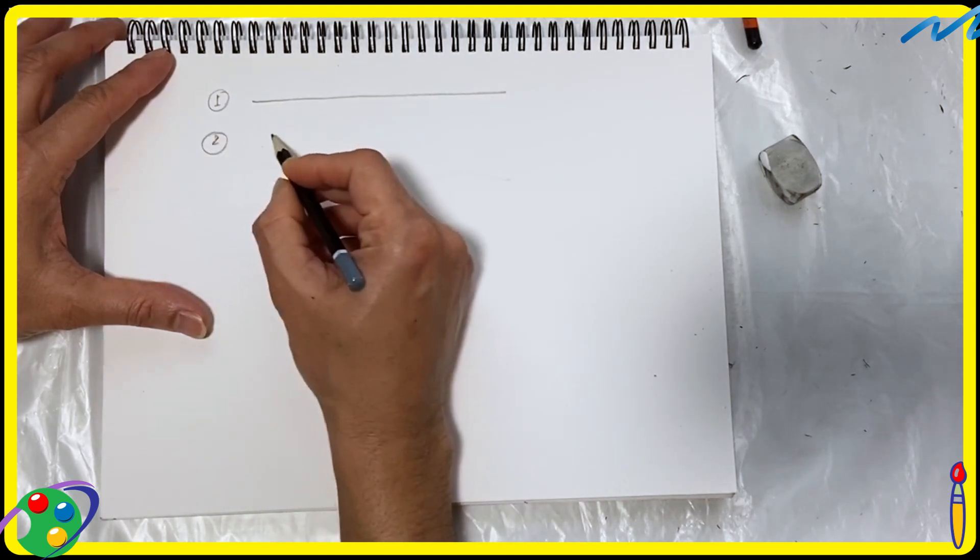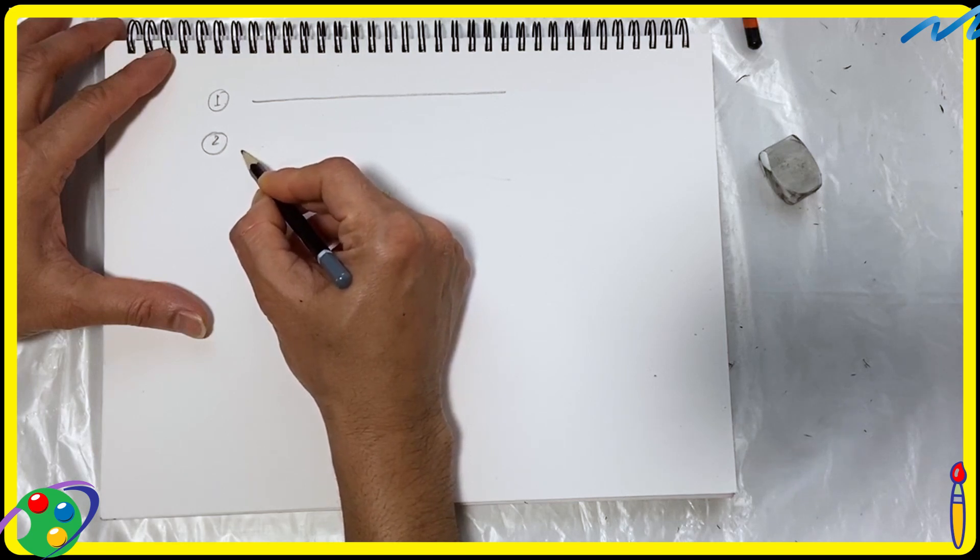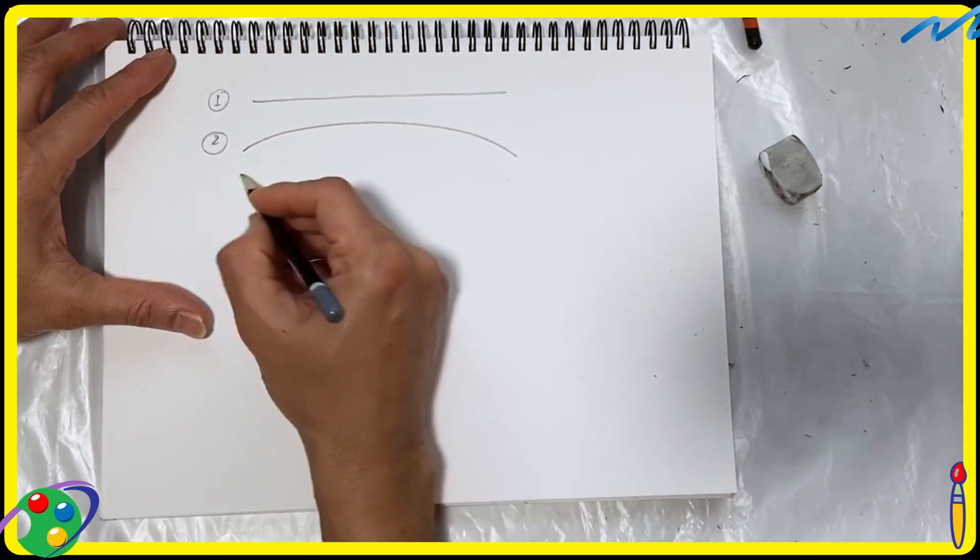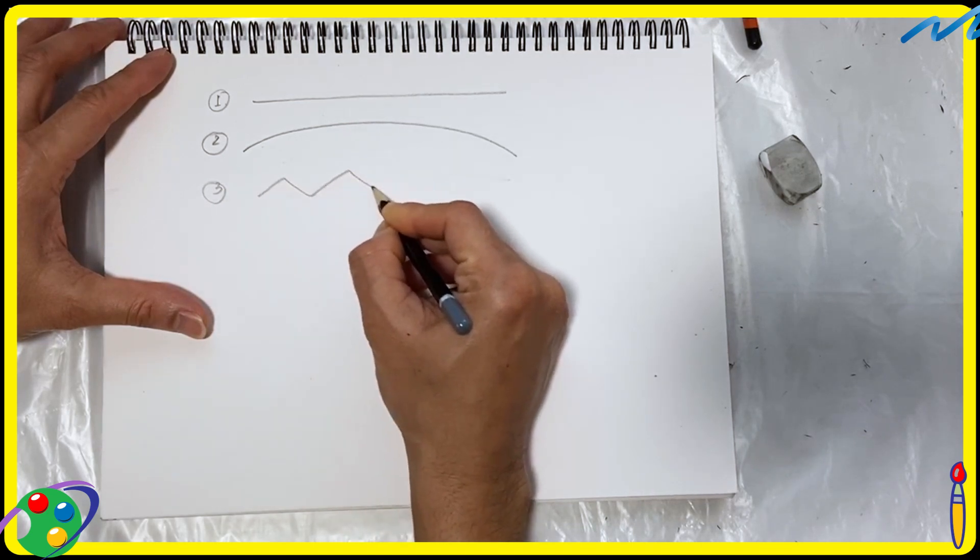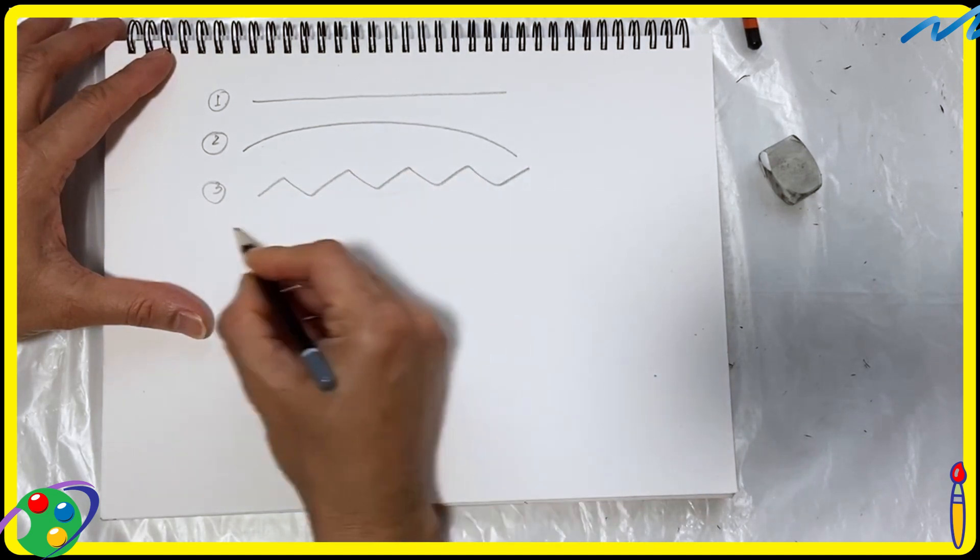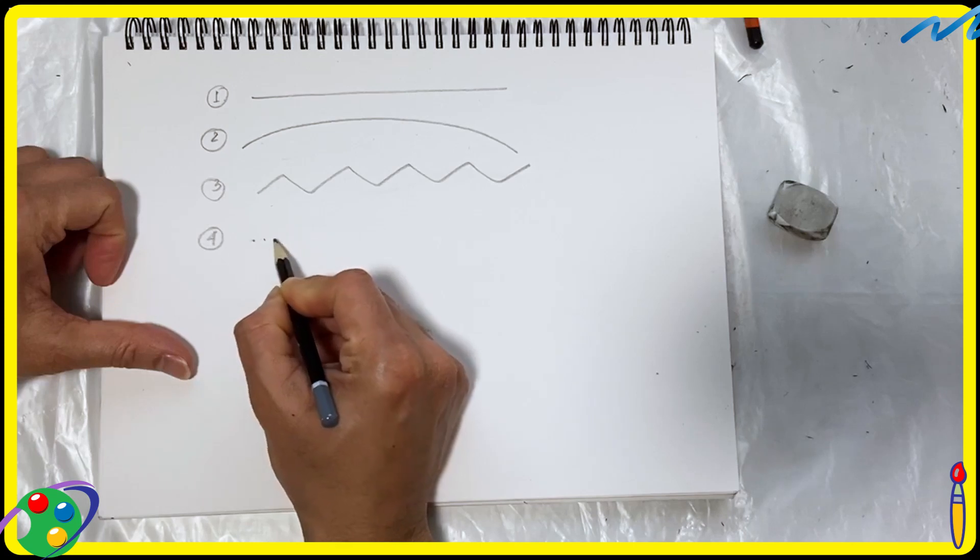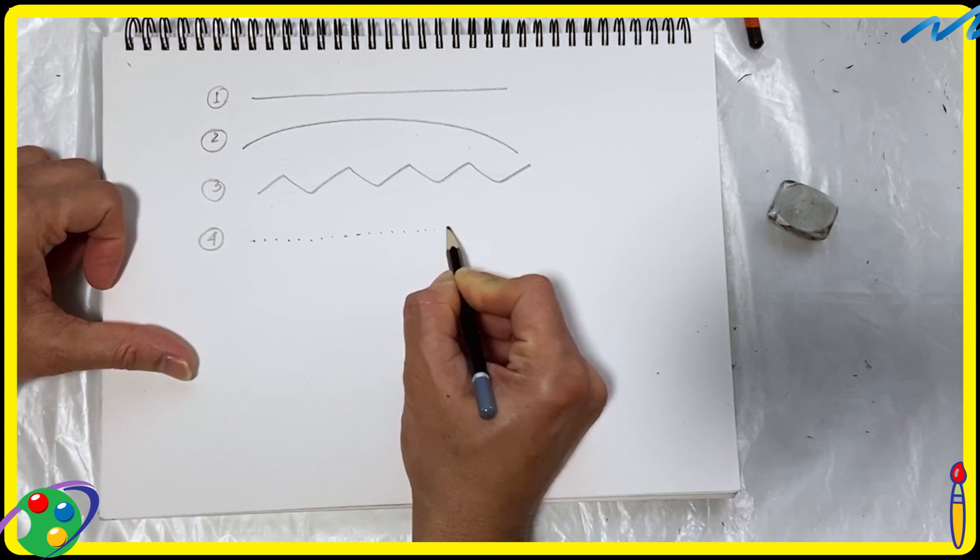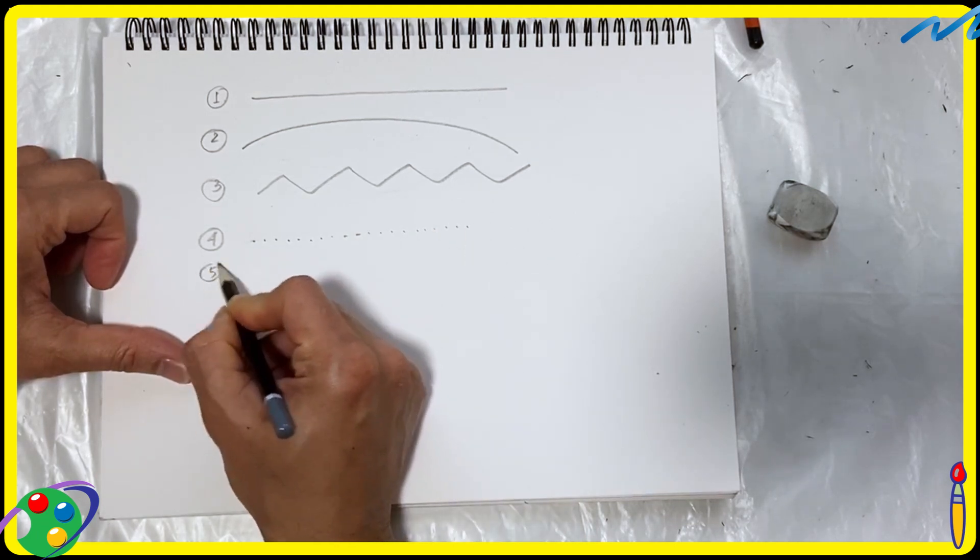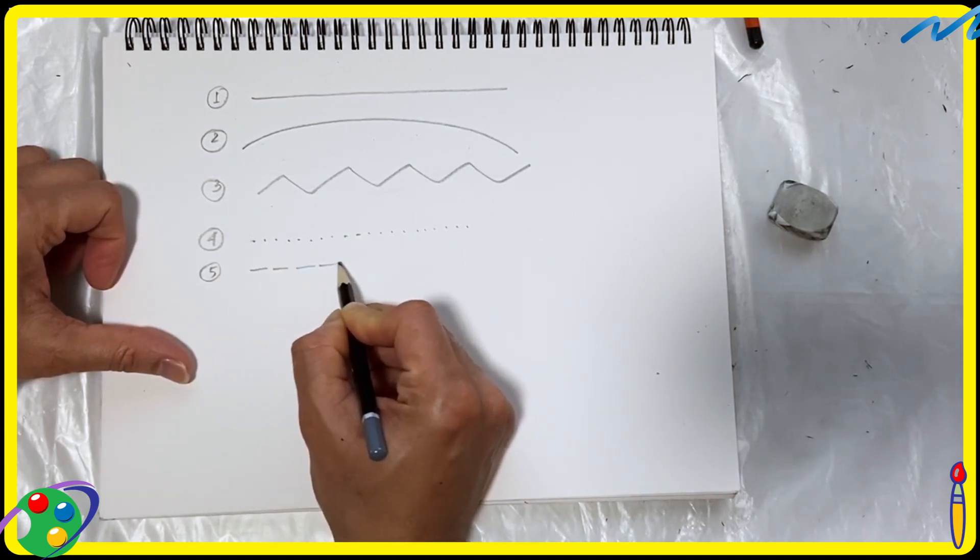The first one is a straight line. The second one is a curved line. The third one is a zigzag line. The fourth one is a dotted line. And the fifth one is a dashed line.